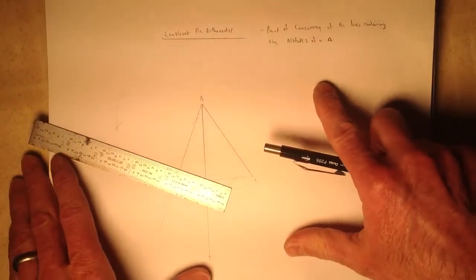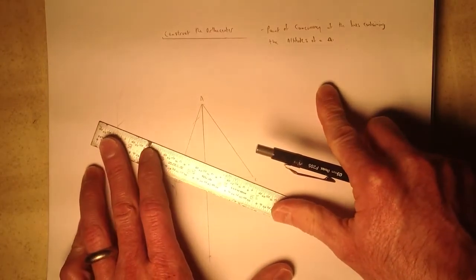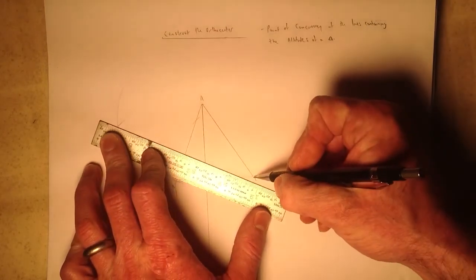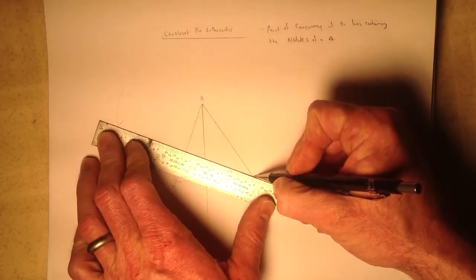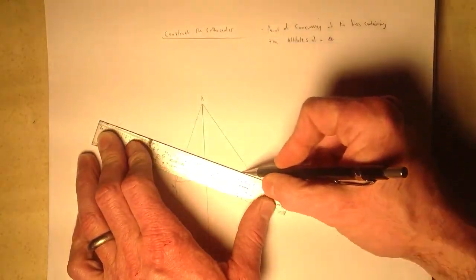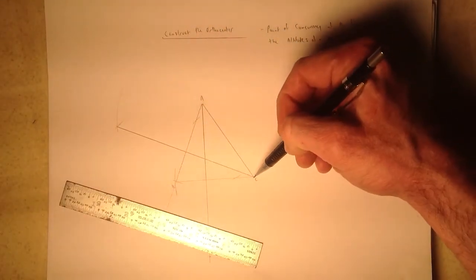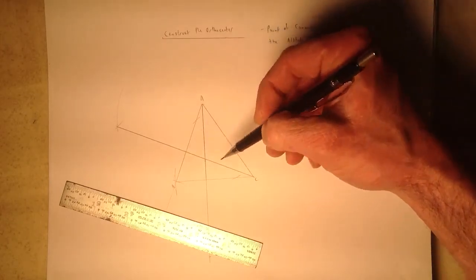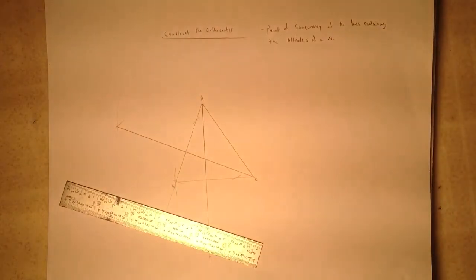And I will connect that intersection with vertex C from C to the intersection down this end. My altitude lies between vertex C and the opposite side, and this line is my line containing my altitude.